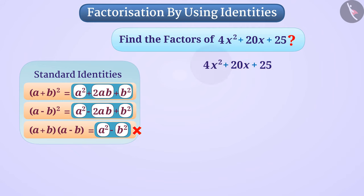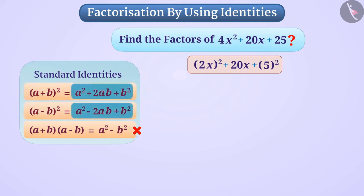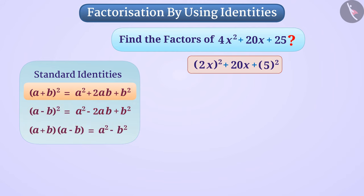We can write 4x² as (2x)² and 25 as 5². In this way, we see that the first term and the third term in this expression are perfect squares. At the same time, we also see that the sign of the middle term is positive. This expression corresponds to the right side of the identity: (a + b)² = a² + 2ab + b². Therefore, we can use this identity.